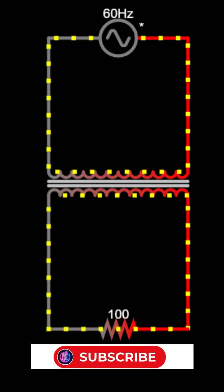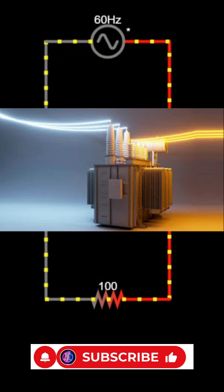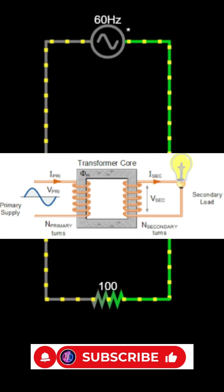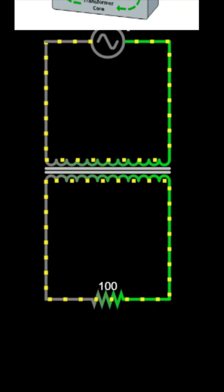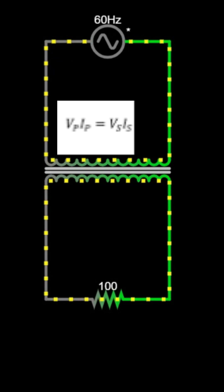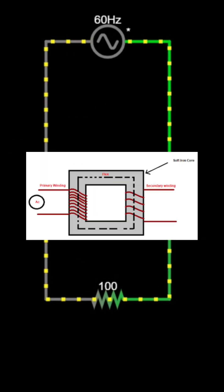Welcome to part 2 of our video about transformers. In part 1, we learned the basic principle and the key formulas: Np over Ns equals Vp over Vs, and Vp times Ip equals Vs times Is.